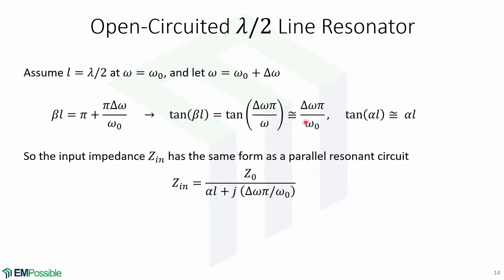We will perform the same analysis as for the short-circuited half-wavelength line resonator. Assume L equals lambda over 2 at the resonant frequency omega-0, and let omega equal omega-0 plus delta-omega. Thus beta*L equals pi plus pi*delta-omega over omega-0, and tangent(beta*L) is roughly equal to delta-omega*pi over omega-0. Assuming low-loss lines, tangent(alpha*L) is roughly equal to alpha*L. Putting everything into the input impedance formula, we obtain this expression.